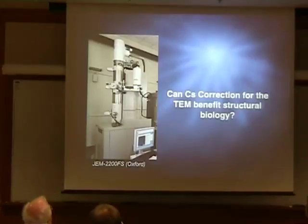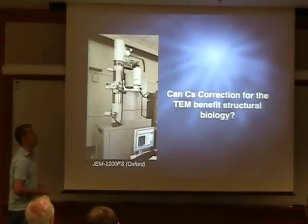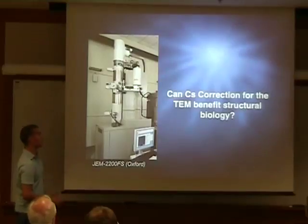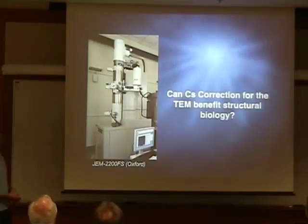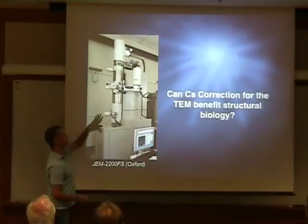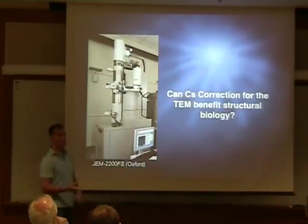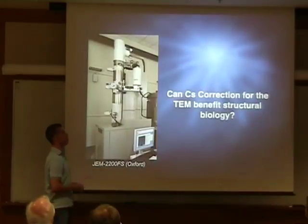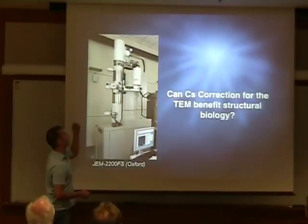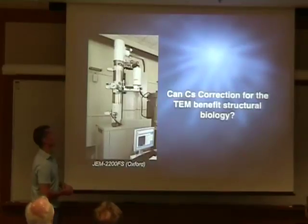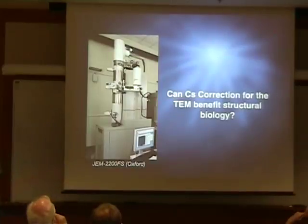Can CS correction for the TEM benefit structural biology? This is the microscope currently in Oxford, in the material science department. They have a 2200FS, which is very similar to the 2100 that we have downstairs. The only real difference between the basic 2200FS and the 2100 is the energy filter. Beyond that, they've added two additional correctors — they have both the TEM and the STEM CS correctors. So this is a dual CS corrective machine.